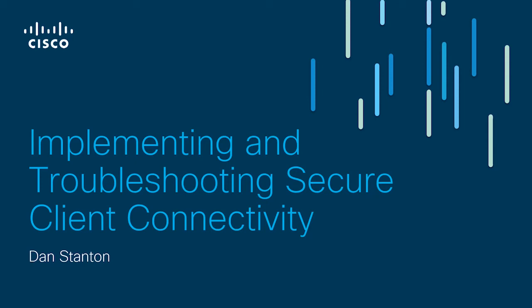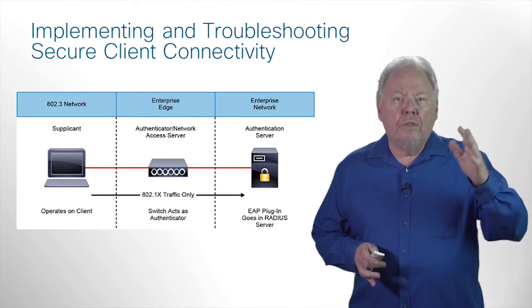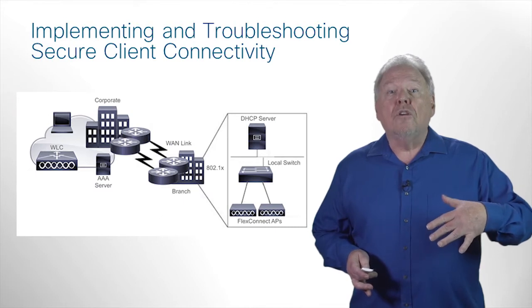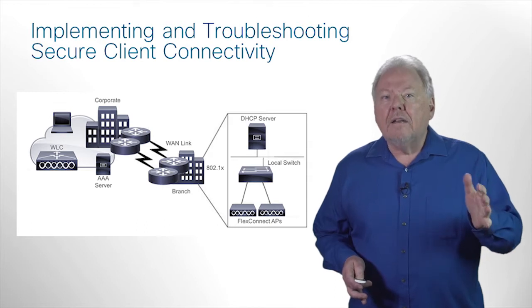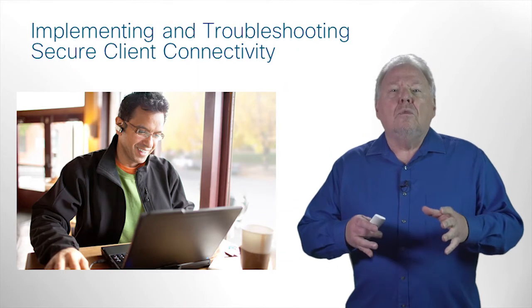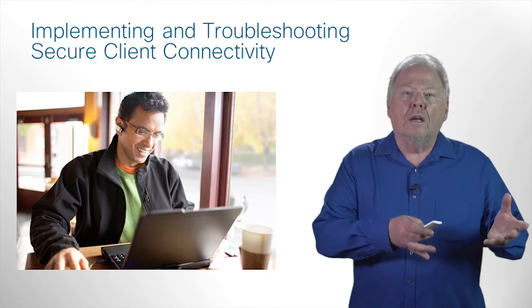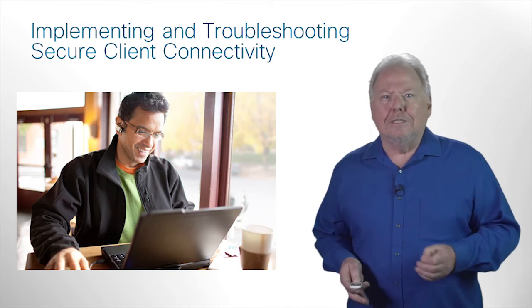In this section, you will continue with implementing and troubleshooting secure client connectivity. This starts off with configuring 802.1X authentication for both the wireless controllers and the wireless clients. You will continue with implementing AAA override, configuring the wireless LAN for FlexConnect, and configuring wireless guest services. Then, you will continue with web authentication techniques for centralized web authentication on the wireless controllers, followed by centralized web authentication on Cisco ISE as well.